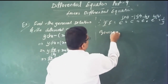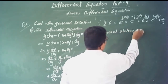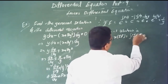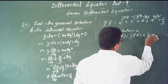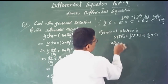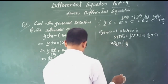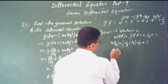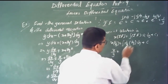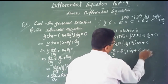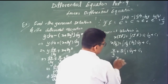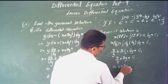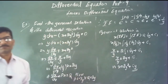Write the general solution: x times (1/y) equals the integral of (1/y) times 2y dy plus constant. The y terms cancel, giving the integral of 2 dy plus constant. Therefore x/y equals 2y plus constant. Multiplying through: x equals 2y squared plus c times y. This is the general solution.